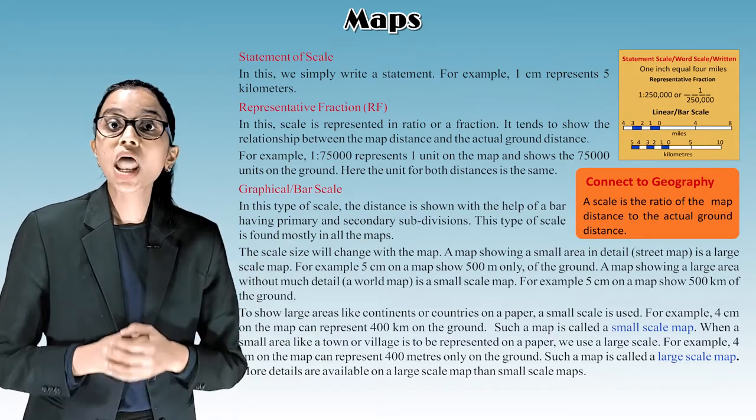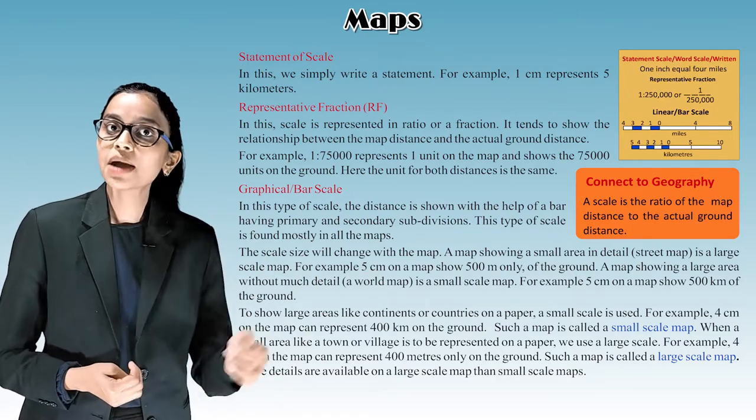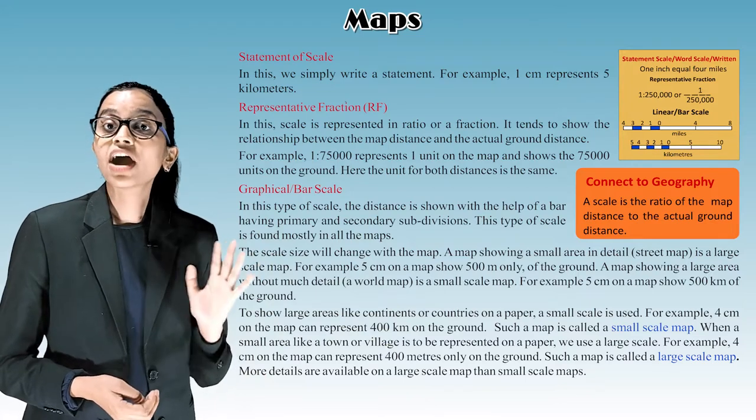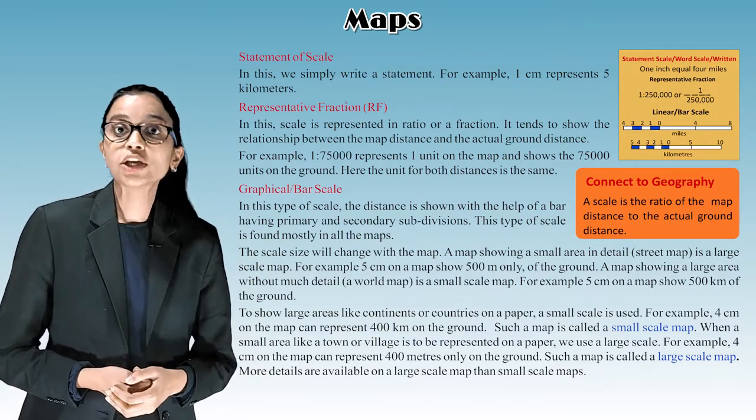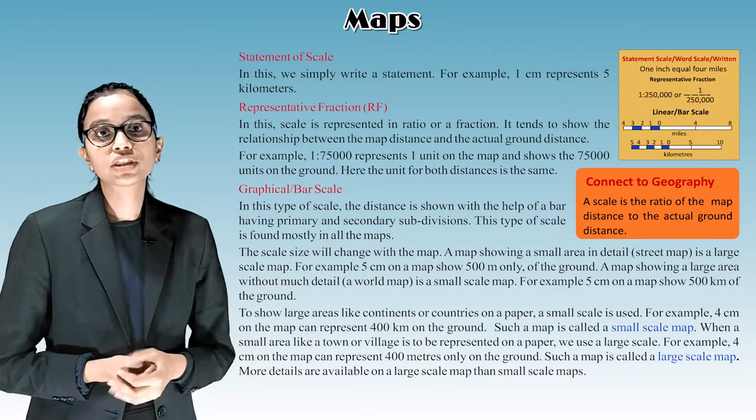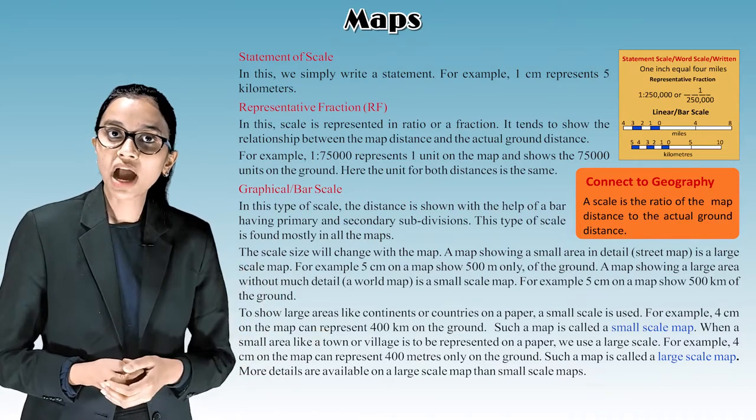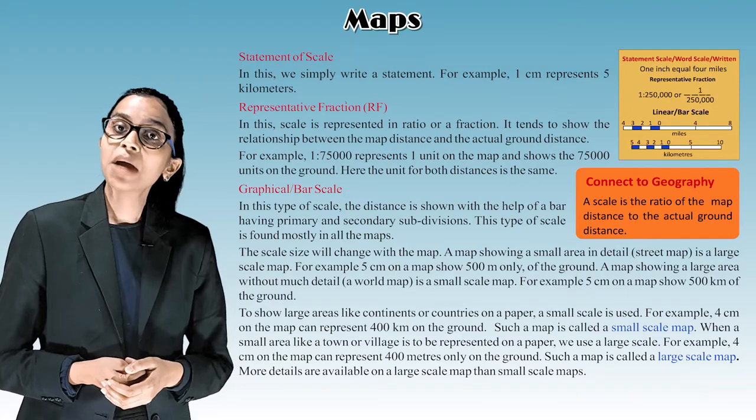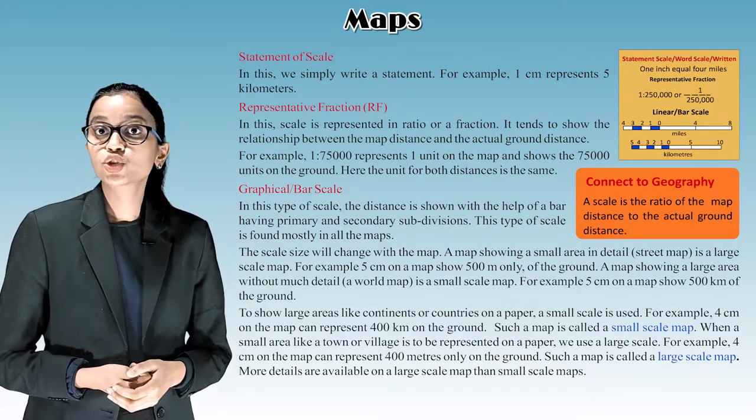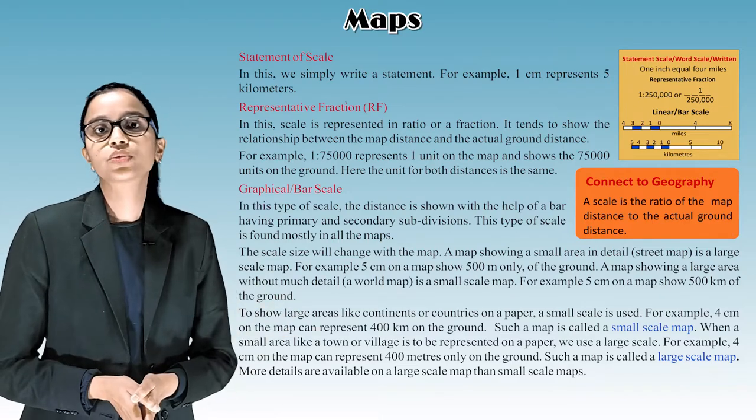A map showing a small area in detail, street map, is a large scale map. For example, 5 centimeters on a map shows 500 meters only of the ground. A map showing a large area without much detail, a world map, is a small scale map. For example, 5 centimeters on a map shows 500 kilometers of the ground.